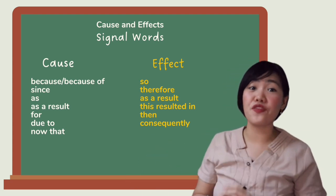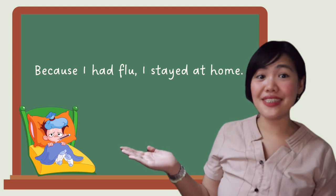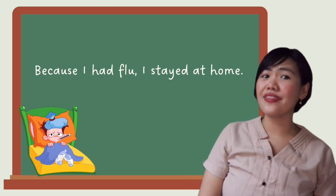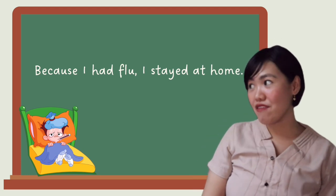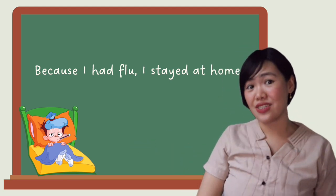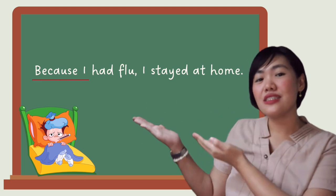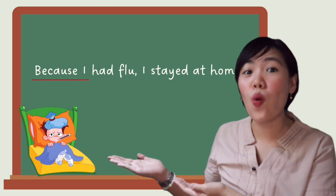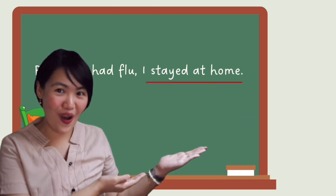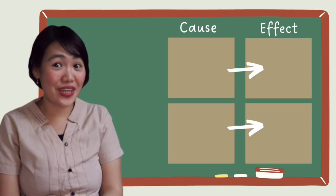Now it is time for us to identify cause and effect relationships with signal words. We have: because I had the flu, I stayed at home. Let us identify the cause using the signal word. The signal word in this sentence is because. This signal word shows us the reason why I stayed at home. I had the flu is the cause, and the effect is I stayed at home.